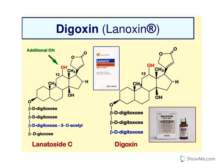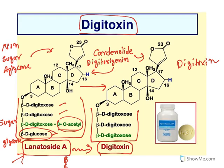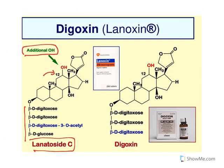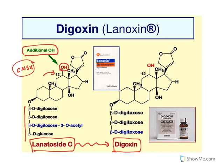Now let us talk about digoxin. Again you have a sugar part and a non-sugar part, but the difference is there is an additional hydroxy group at the 12th carbon. There is no hydroxy group in lanatoside A or digitoxin, but digoxin comes from lanatoside C. Partial hydrolysis of lanatoside C results in digoxin, which contains a 12-hydroxy group. Because of this polar group, digoxin cannot cross the CNS, so CNS-related side effects will not be present. Therefore digoxin is more tolerable than digitoxin.